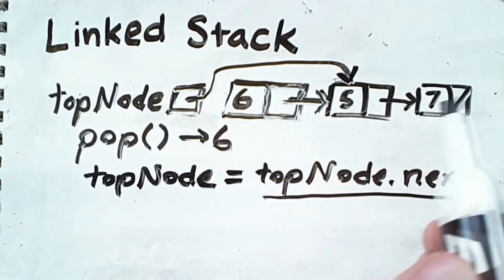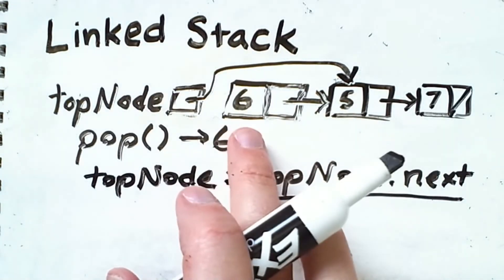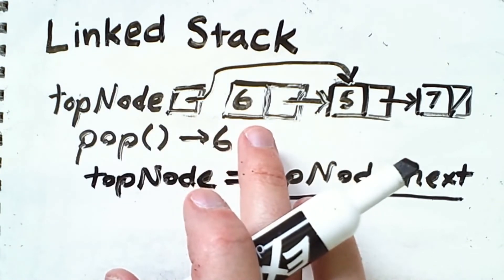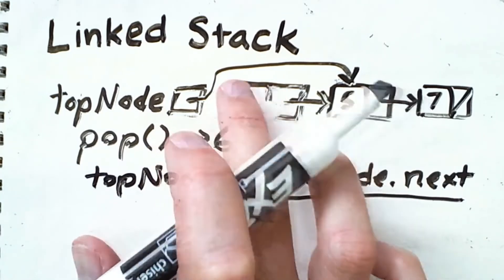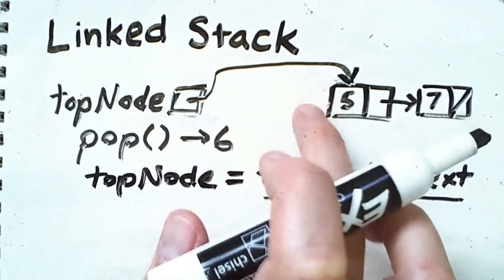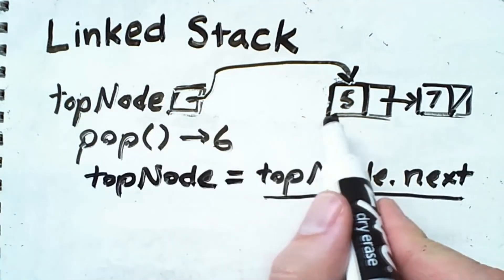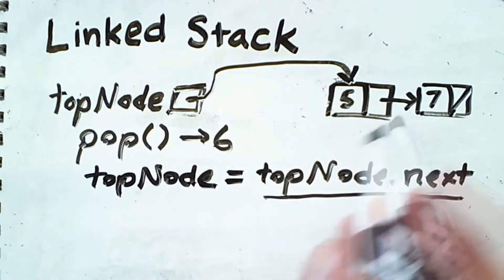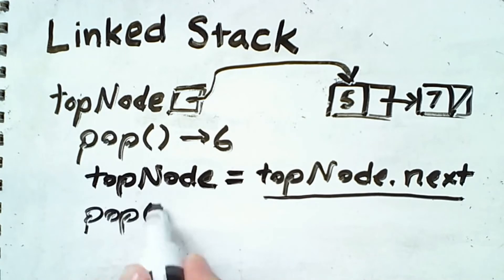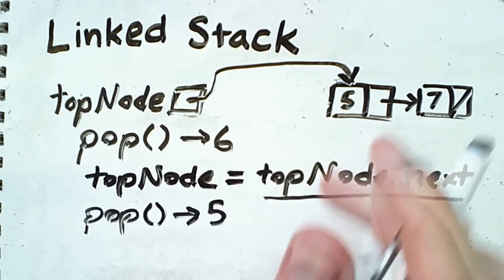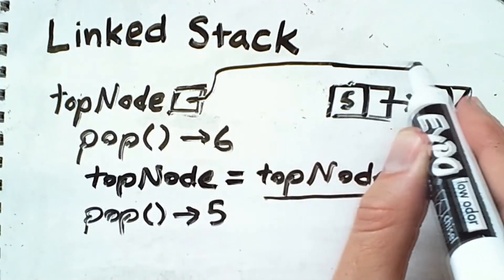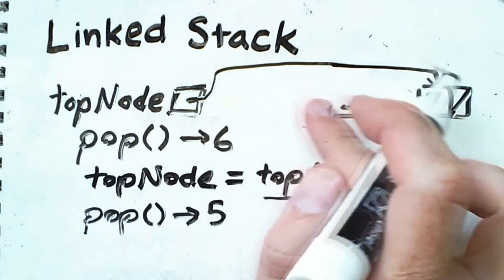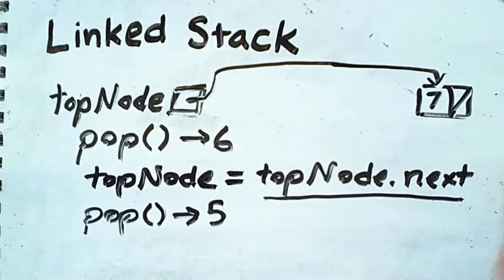Now, in a language like Java, this remaining node which used to be on top will eventually be reclaimed by garbage collection. In some other languages, you have to explicitly deallocate that memory to make this node go away. Either way, we're left with a reference to the node that contains 5 in it, because that is now the new top node. If I were to pop again, that would return a value of 5, and I would change this arrow to point here, and this node would either be explicitly deallocated or, in Java, eventually reclaimed by garbage collection.